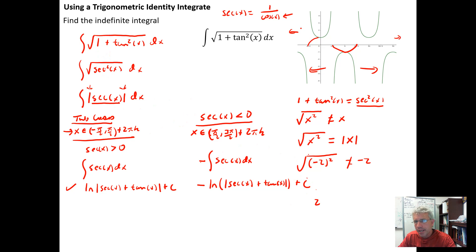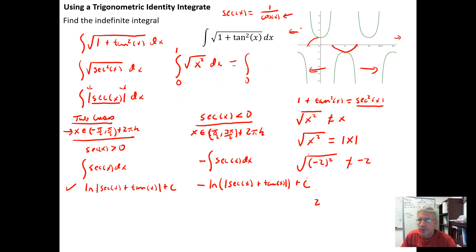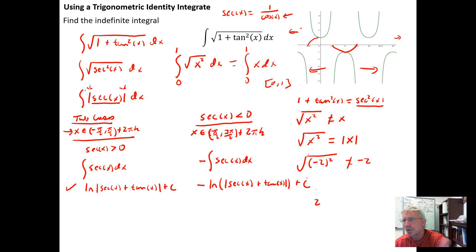The key takeaway is that the square root of sec²x is not simply the secant function. However, sometimes you don't need to worry about the absolute value — for example, with a definite integral from 0 to 1 of √(x²) dx, you can simplify directly to the integral of x dx, because there are no negative values on the interval from 0 to 1.